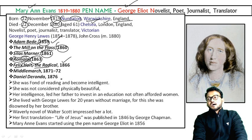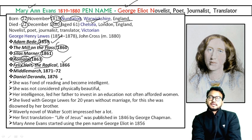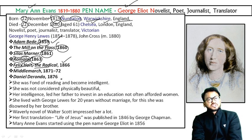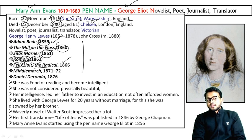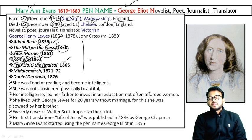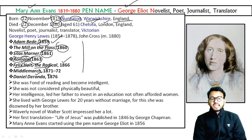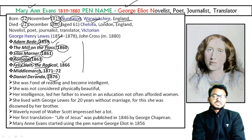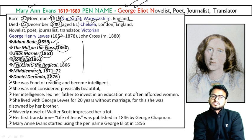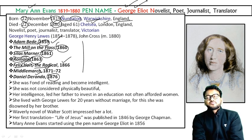In previous exams, such as December 2019, there were a number of questions from chronological order. So these works are listed in chronological order. Middlemarch appeared in 1871–72, and Daniel Deronda in 1876.